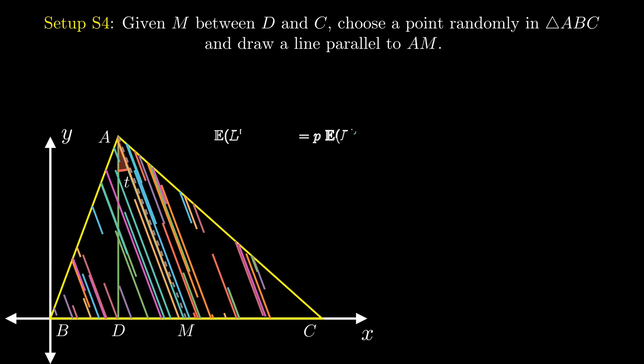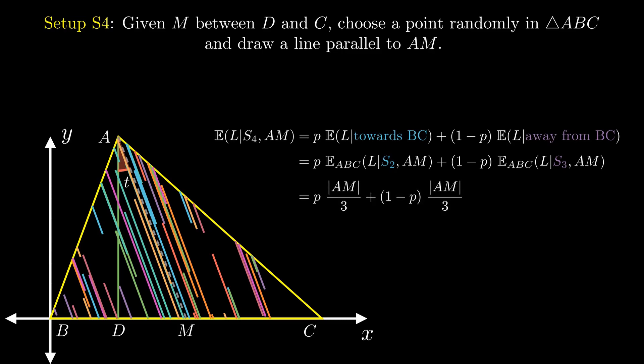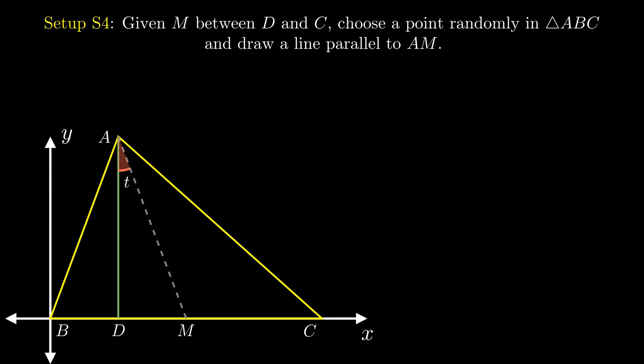From what we have seen so far, we know that the expected value is the same irrespective of the line being towards or away from BC. Therefore, regardless of what P is, the expected length in this setup still remains at AM by 3. In terms of the angle T between AD and AM, this expected length can be written as AD by 3 cost T or Hₐ by 3 cost T.